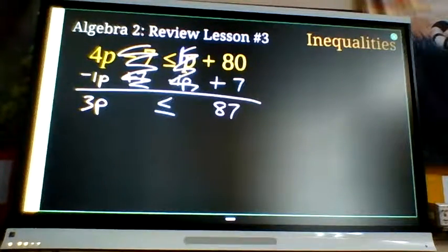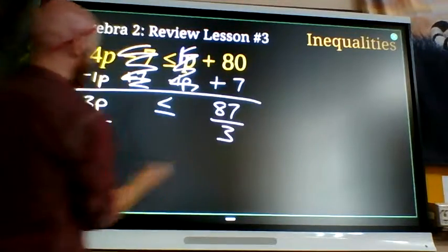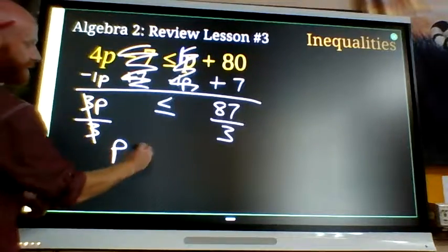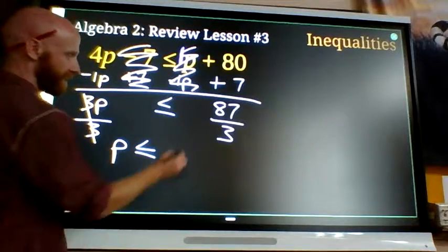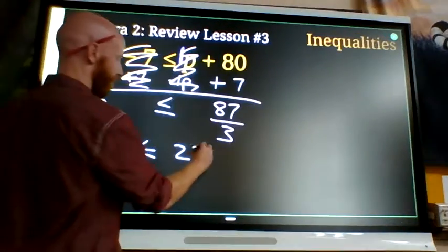Divide by 3 on both sides. Divide by 3 gets rid of times 3. 3p is less than or equal to, so divide by 3 keeps balance, 29, I believe.